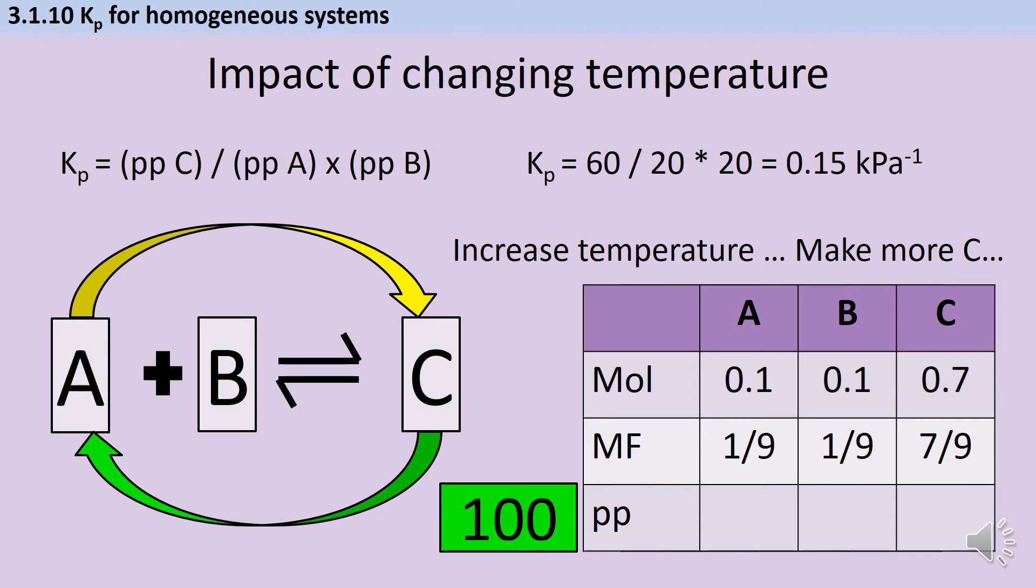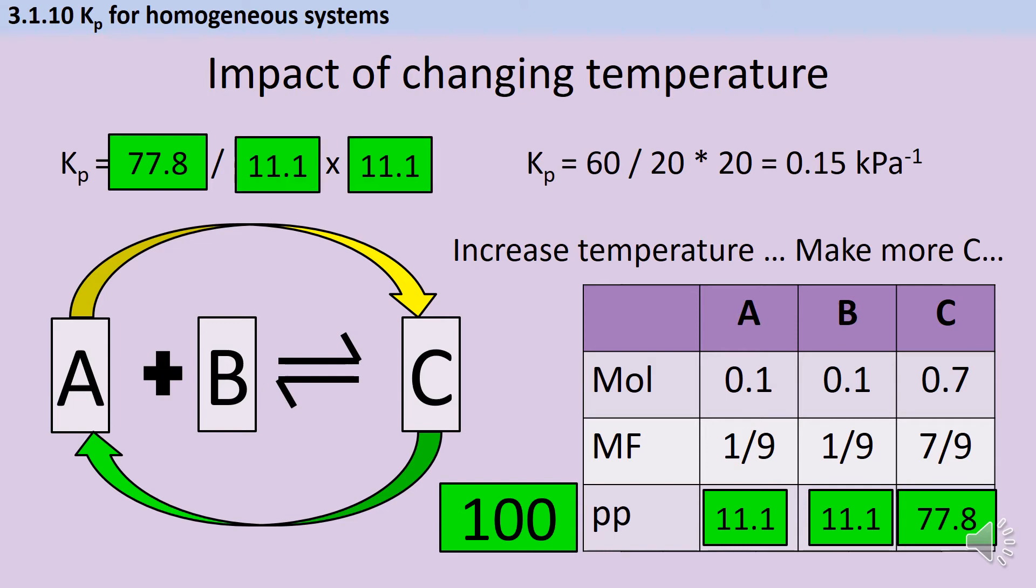We had a starting pressure of 100 kilopascals and that's not going to change. So that gives us partial pressures of 11.1, 11.1 and 77.8 kilopascals. If we substitute those values into our expression for Kp, then we have 77.8 divided by 11.1 times 11.1. And that gives a final value for Kp of 0.63 kilopascals to the minus one.